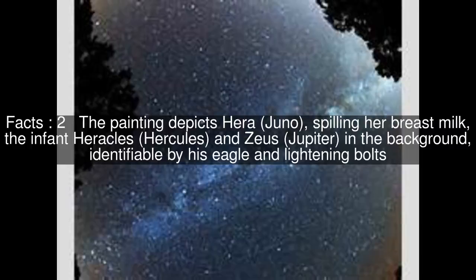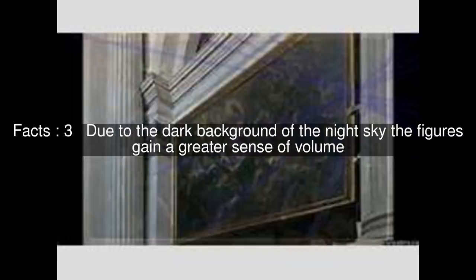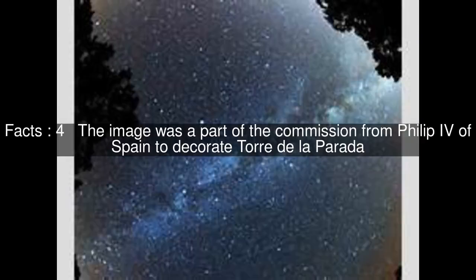Zeus is identifiable by his eagle and lightning bolts. Due to the dark background of the night sky, the figures gain a greater sense of volume. The image was part of a commission from Philip IV of Spain to decorate Torre de la Parada.